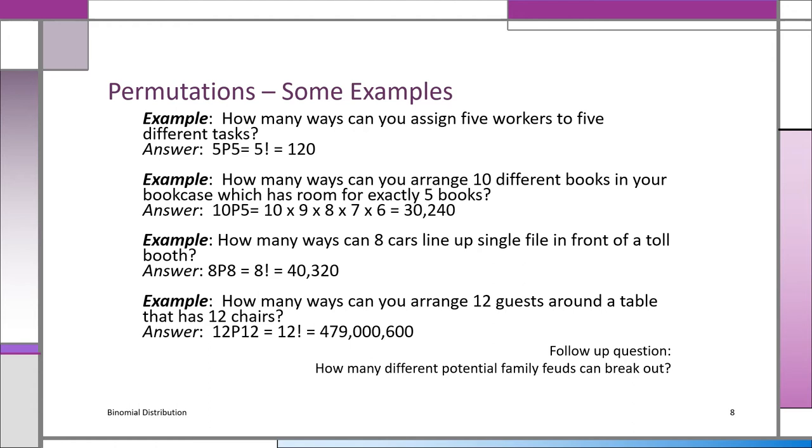How many ways can 8 cars line up single file in front of a toll booth? Well, again, here we have 8 cars. N is 8. But we have 8 slots. There are 8 positions to these cars. So, it's 8P8, which is 8 factorial, which is 40,320.